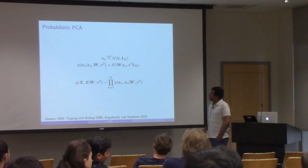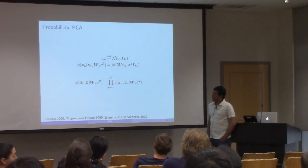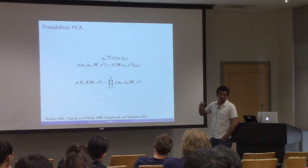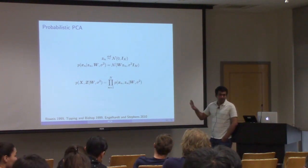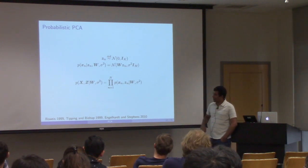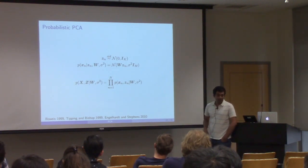Regarding the orthonormal constraints on w: so far there is no constraint on w in the generative model. We'll come to what constraints we're going to impose on it when we do inference.